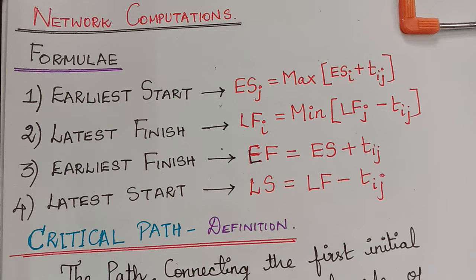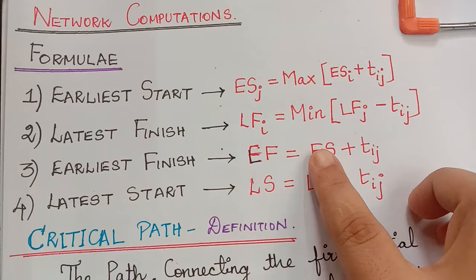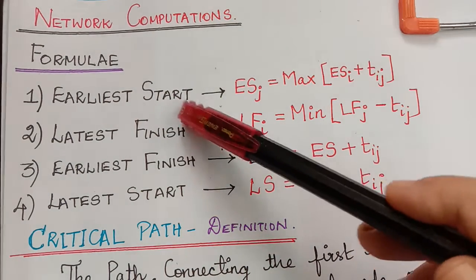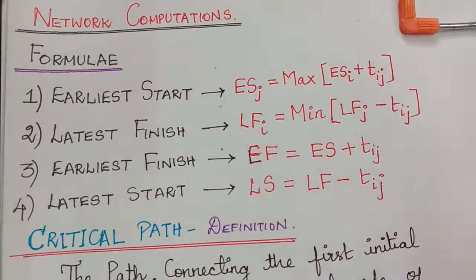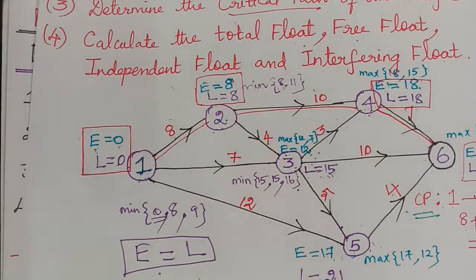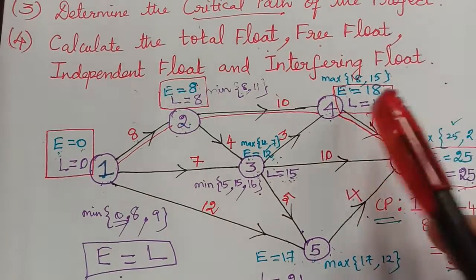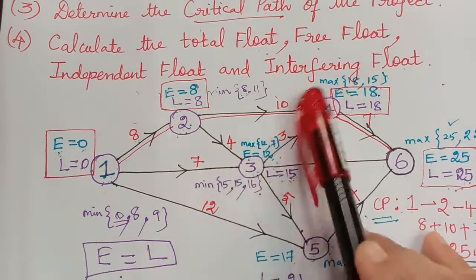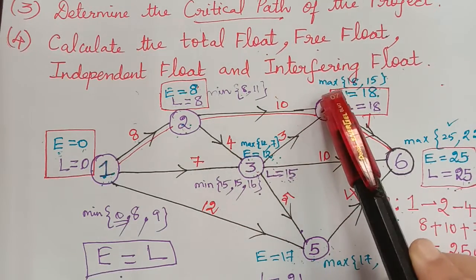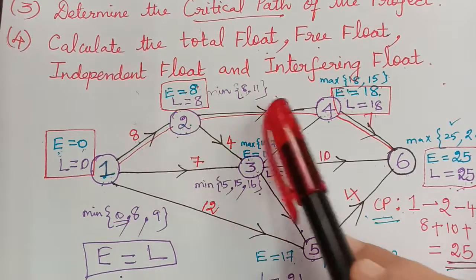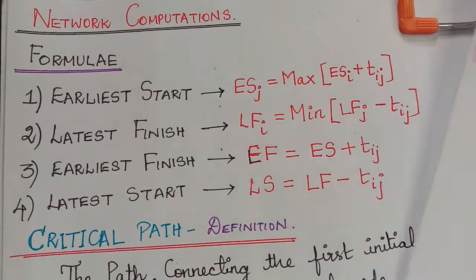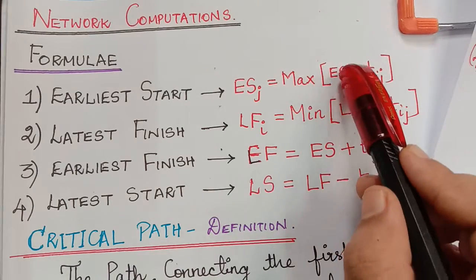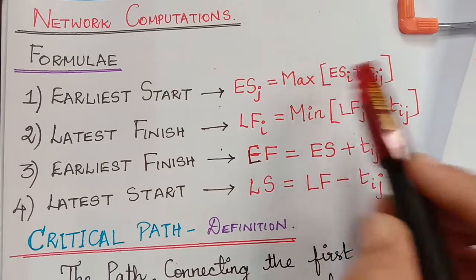Now let us see the definition of all this in detail in comparison to that problem. First of all we will learn about the network computations. Here we have the formulas for earliest start, earliest finish, latest finish, and then latest start. While drawing the network diagram, where there were more than one activity getting into that event, we had the maximum of the duration — the previous value of E added to the duration. So the formula for earliest start is given as the maximum of the previous value of E, i.e., earliest start plus the duration.